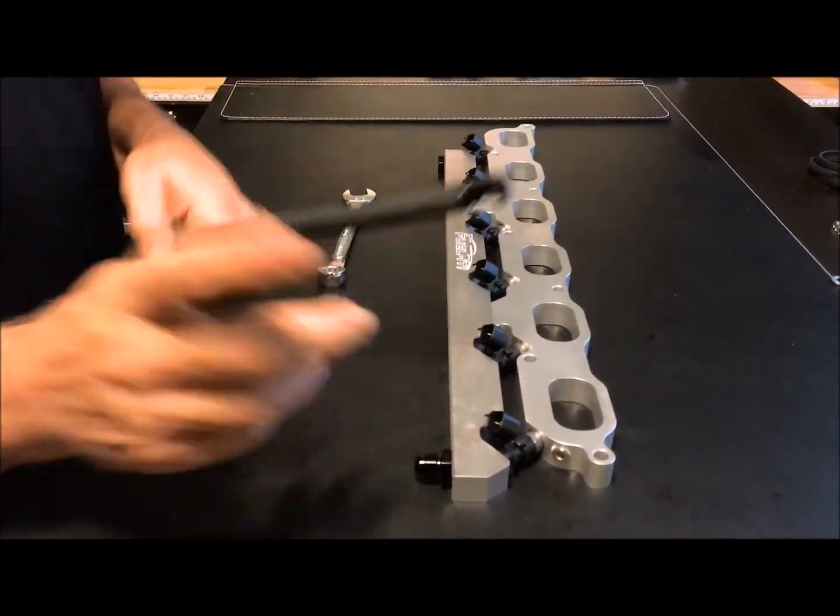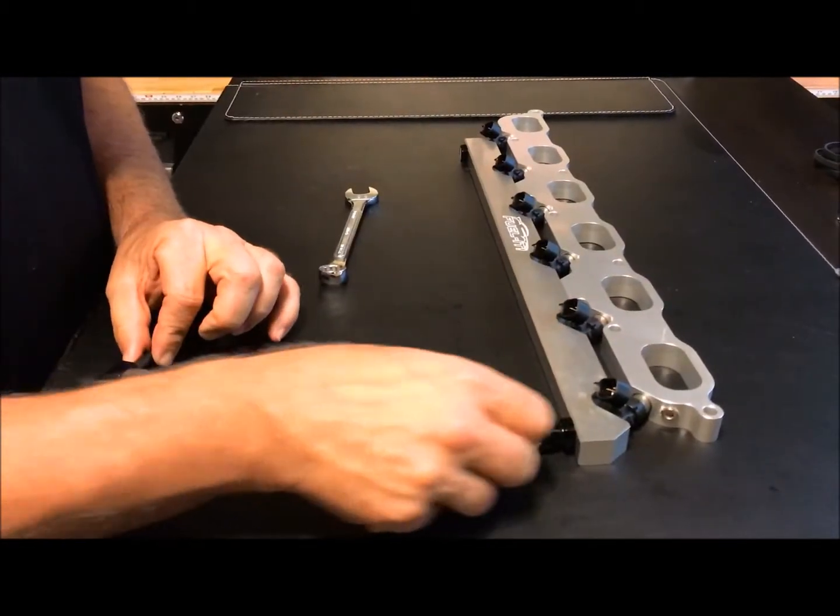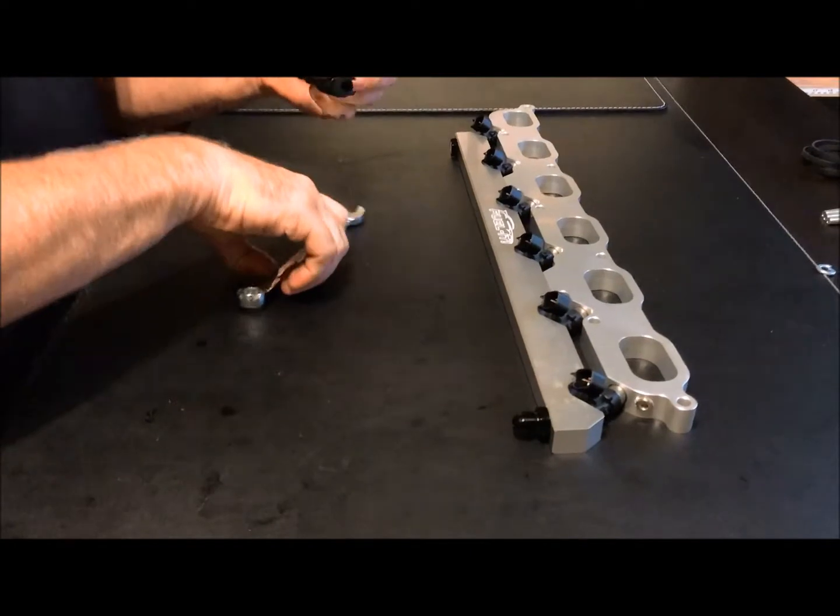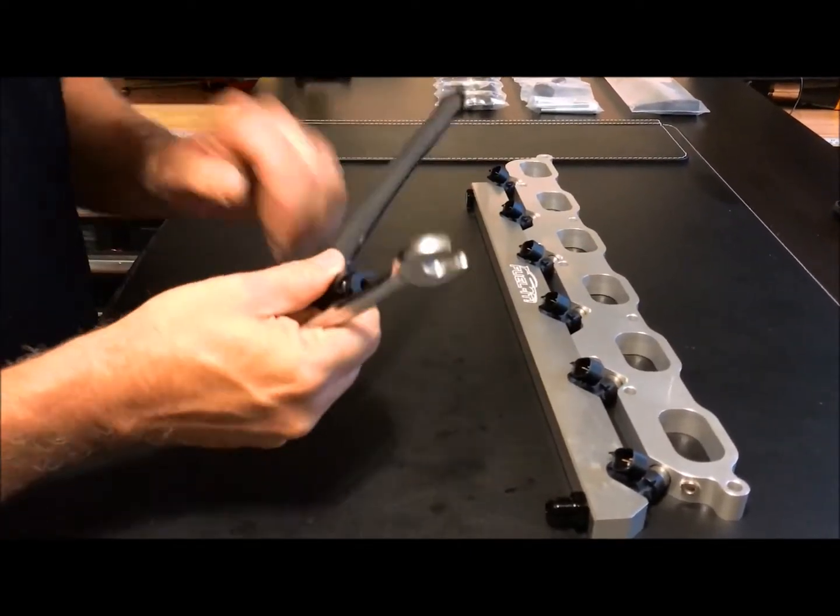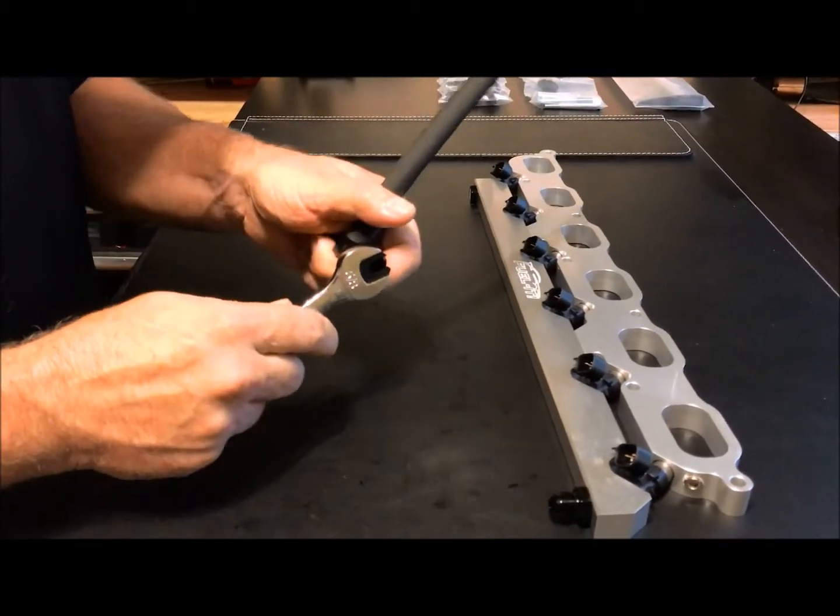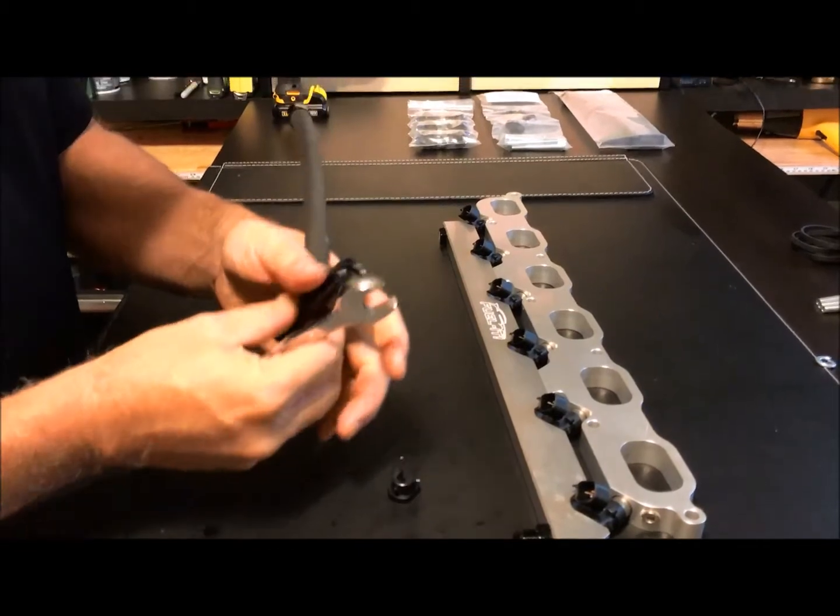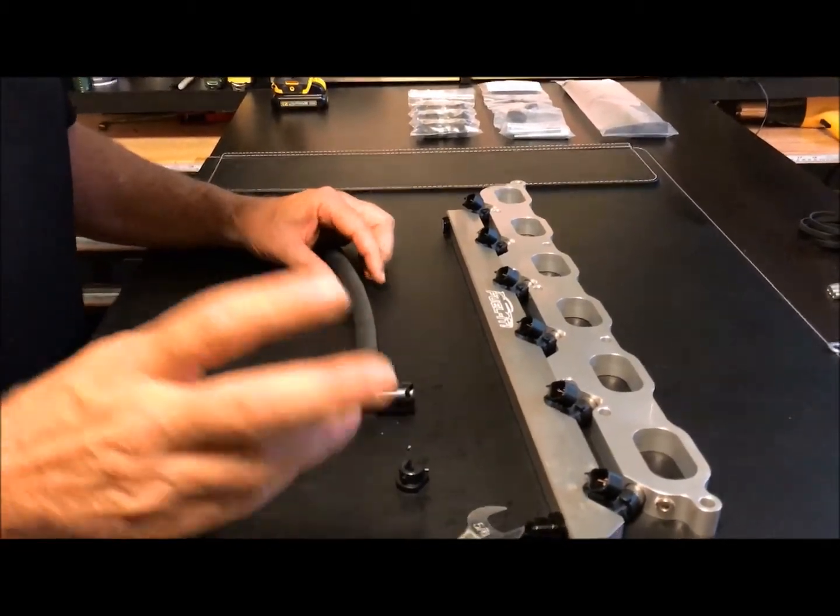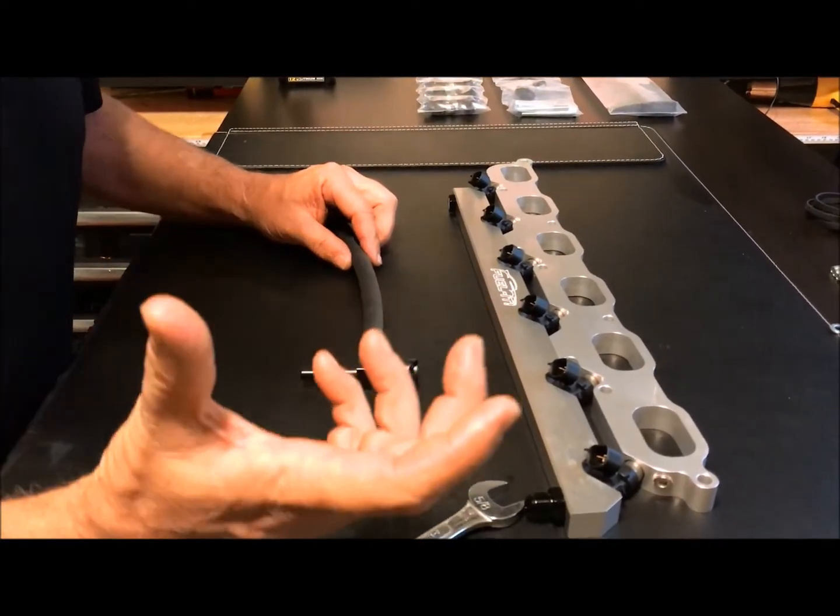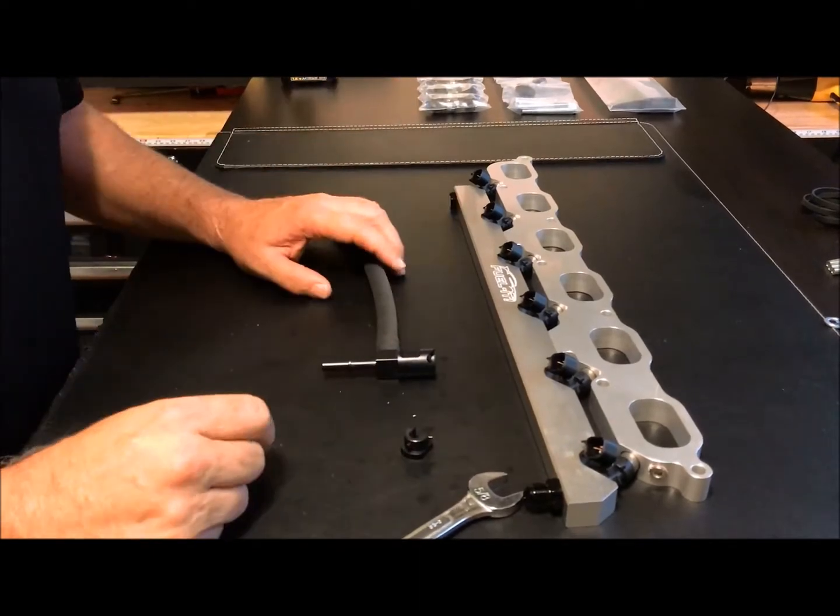So, as you can see, this is a female Dash 6 AN fitting. So, it'll just thread onto the rail like so. And, then, also, for our HPFP hardline, this will connect to the HPFP hardline. And, so, you just take that fitting off the end. And, I'm going to go ahead and pause the video and I'll actually grab an HPFP hardline and the stock fuel line so I can show you exactly how those connect.